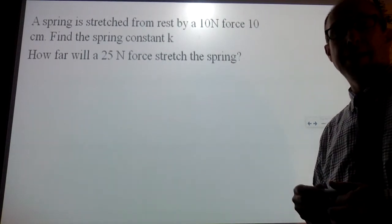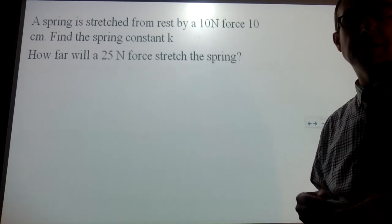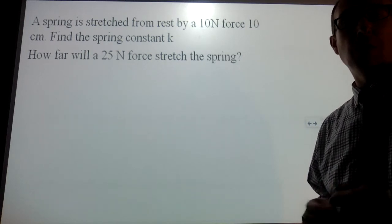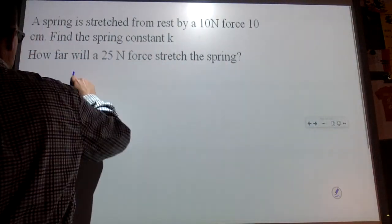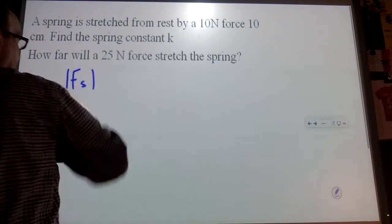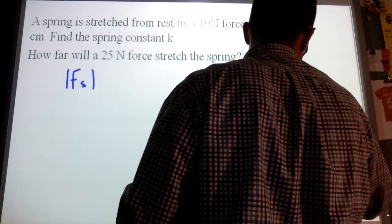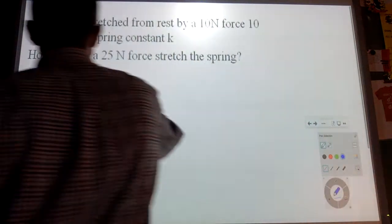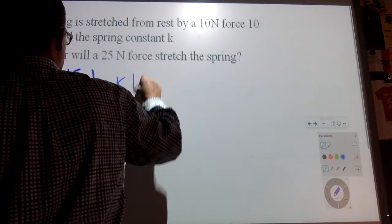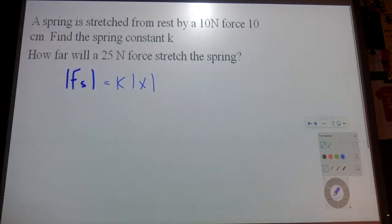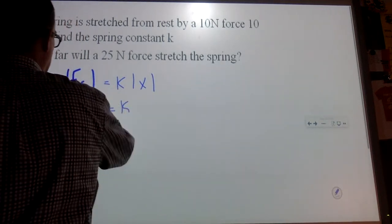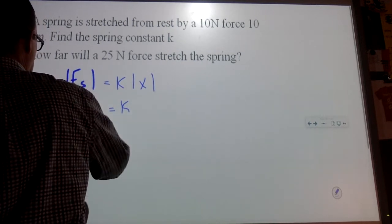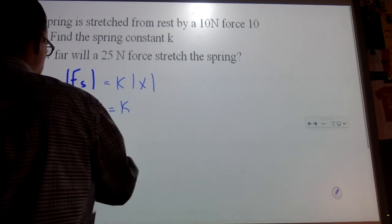A spring is stretched from rest by a 10 newton force 10 centimeters. Find the spring constant K. How far will a 25 newton force stretch the spring? So these are easy. So I'm going to say that the absolute value of F_s is equal to K times x. So K is going to be equal to absolute value F_s over x.